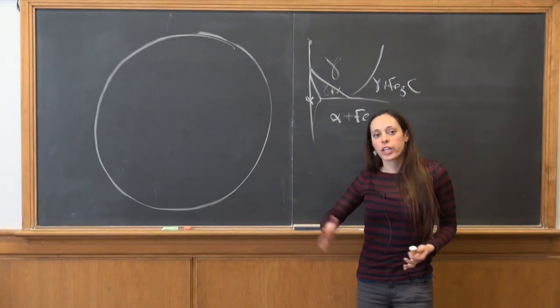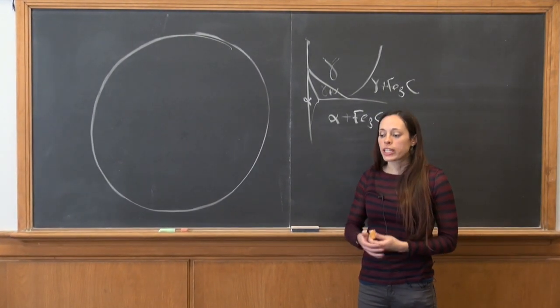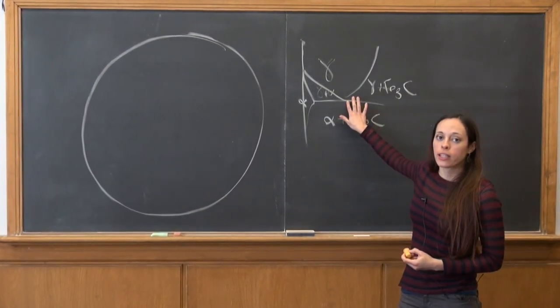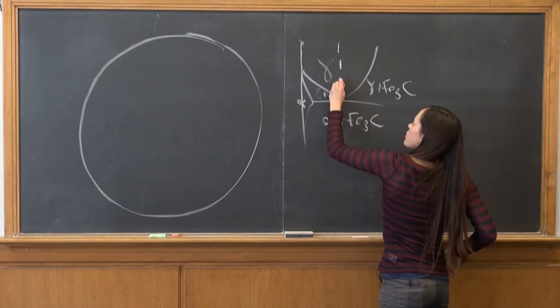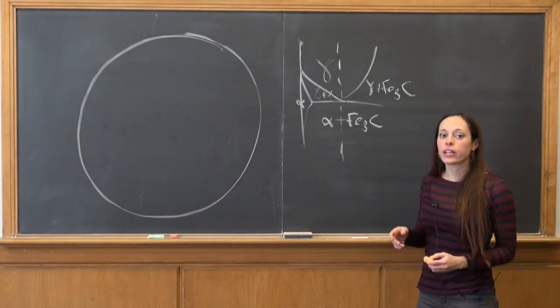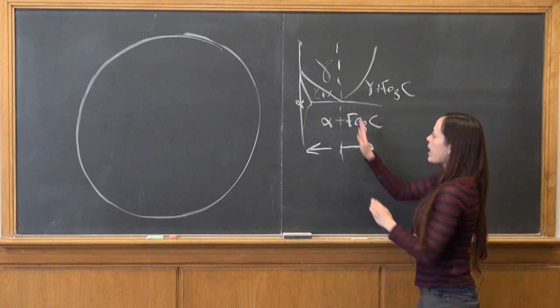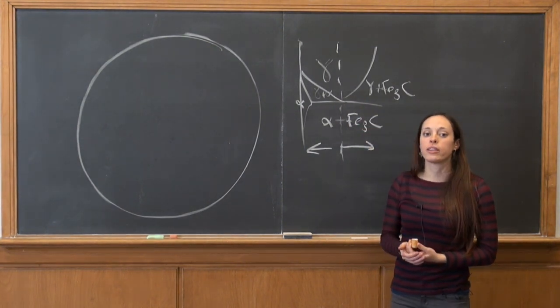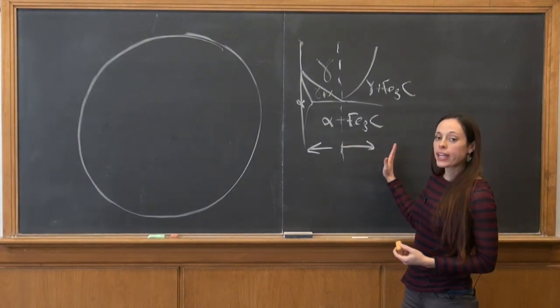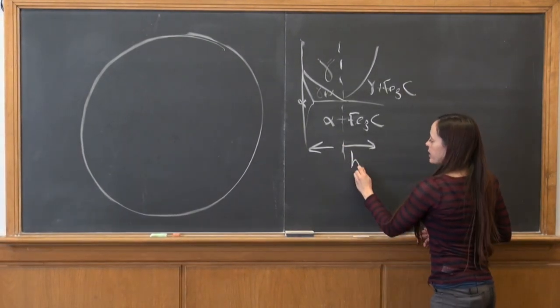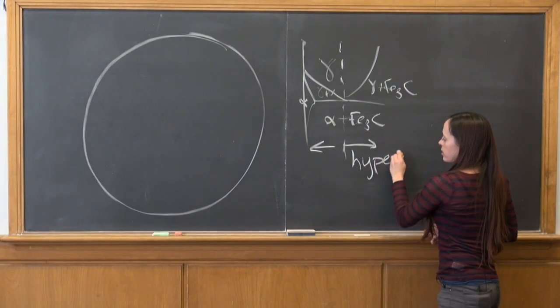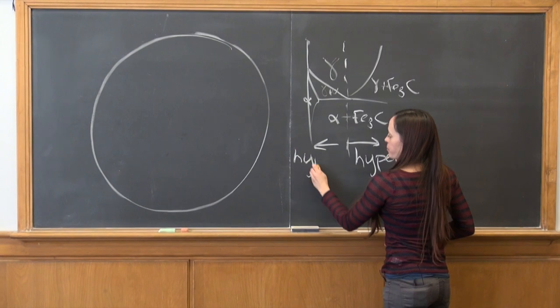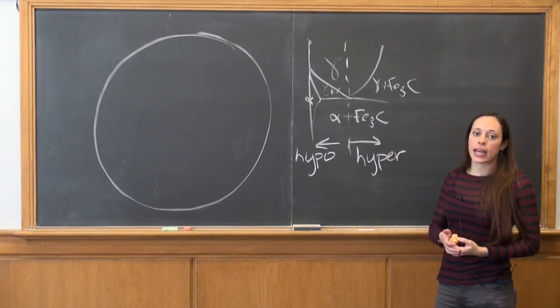So the next keyword in the question is hypoeutectoid. We know that this is the eutectoid point. If we draw a line through here, we know that on either side of this line we are either hyper or hypo eutectoid. On the right-hand side, to higher carbon content, it is hypereutectoid, and to the left, lower carbon content, it is hypoeutectoid.